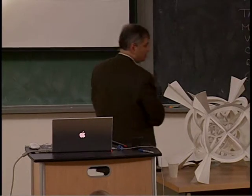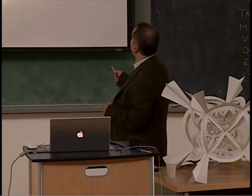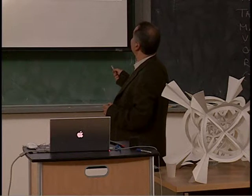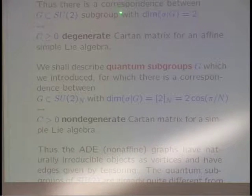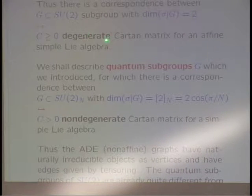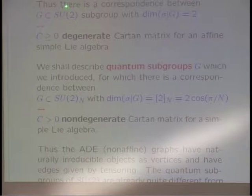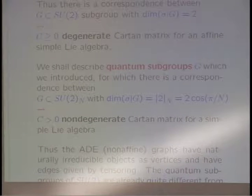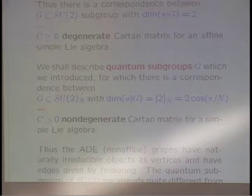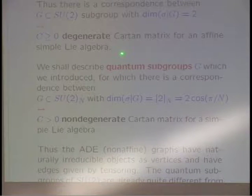I think the reason why this was discovered quite late — only in 1990 — is that this correspondence is between two objects, each of which has one side that is relatively classical and one which is relatively new. So if you work with the Kleinian subgroups — this part is 100 years old, the subgroups of SU(2) — then the graph you'll get will have norm equal to 2, and the Cartan matrix will have one degenerate direction, so the correspondence is done with an affine simple Lie algebra, which is a relatively new object.